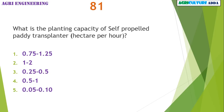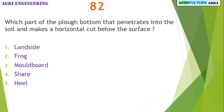What is the planting capacity of self-propelled paddy transplanter in hectare per hour? 0.05 to 0.1 hectare per hour. Which part of the plough bottom penetrates into the soil and makes a horizontal cut below the surface? Share.